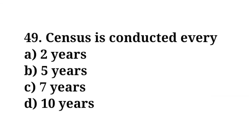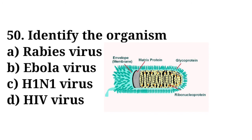Census is conducted every 10 years, so the answer is option D. Identify the organism shown in the image — the organism shown in the image is rabies virus. We have discussed 50 MCQ questions from the community dentistry topic. That's all, thank you.